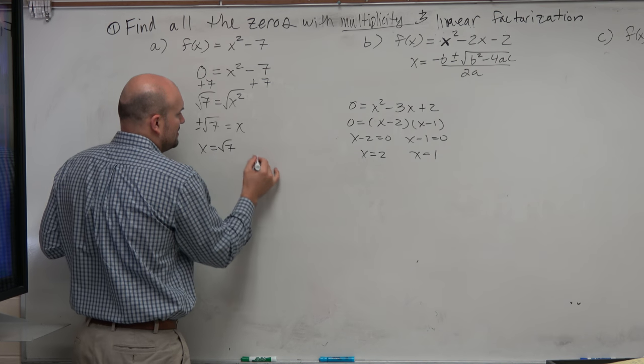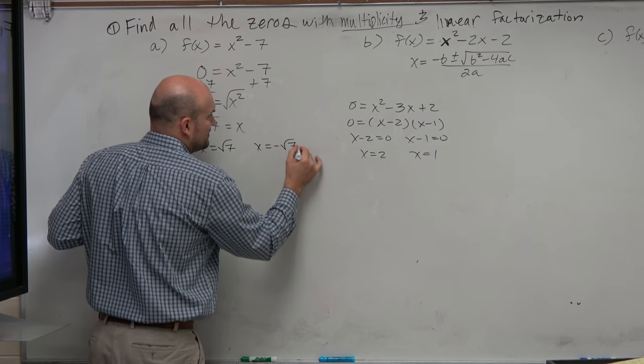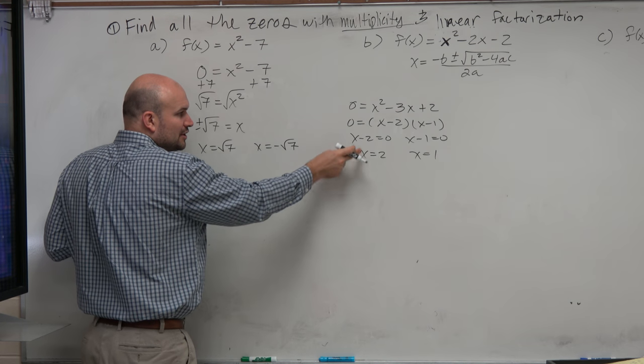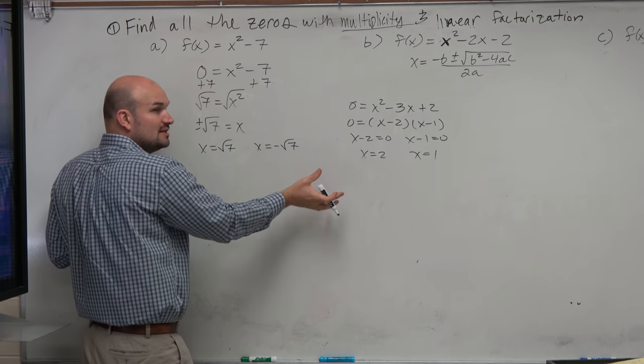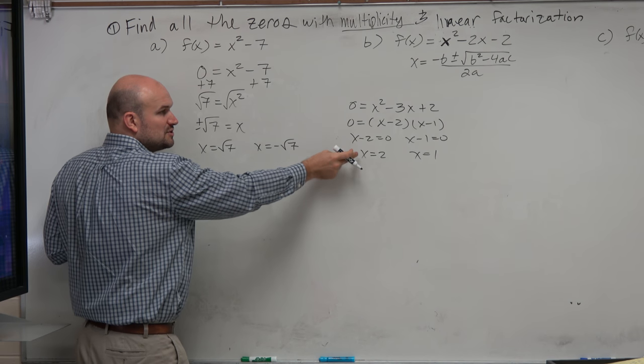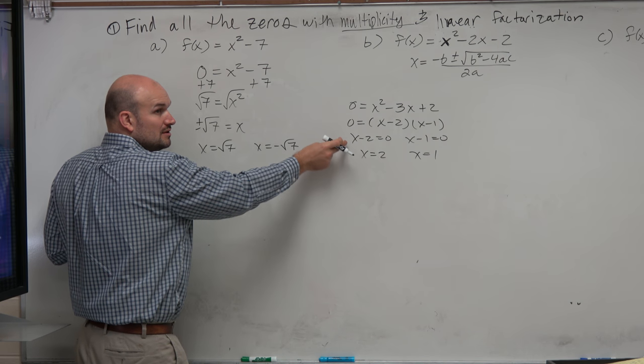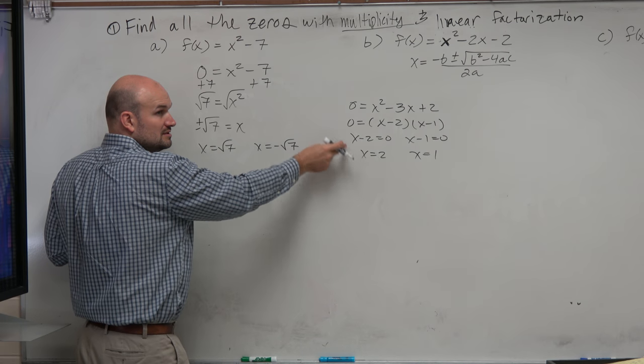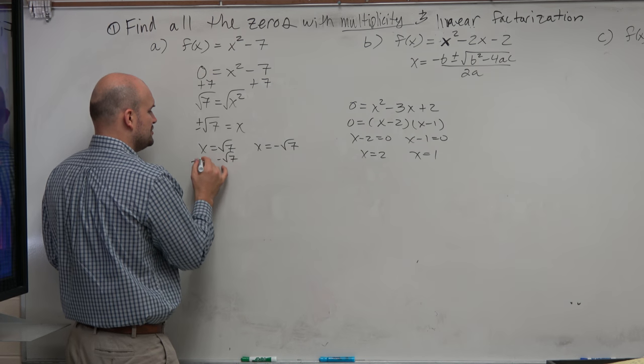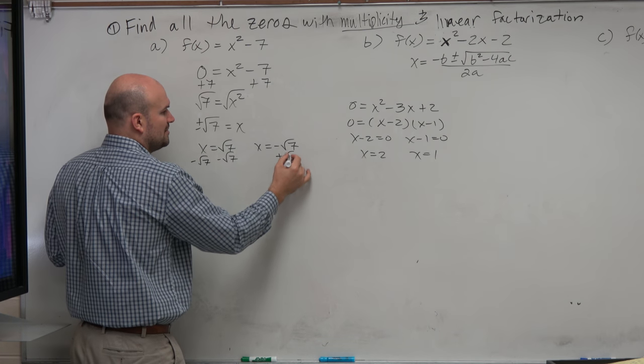So the important thing I'm telling you is these are the zeros: x equals square root of 7 and x equals negative square root of 7. And what I want to do is I want to go from here to here. So basically what we're doing is, to find the factors, we're setting our zeros equal to 0. So you don't need to really show this step, but I'm just doing it so you can see where these zeros are coming from.